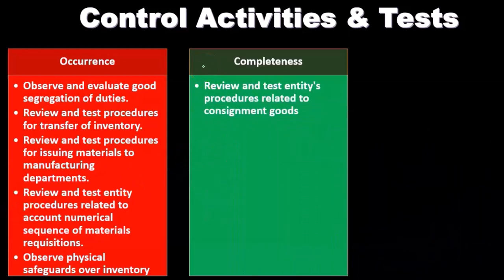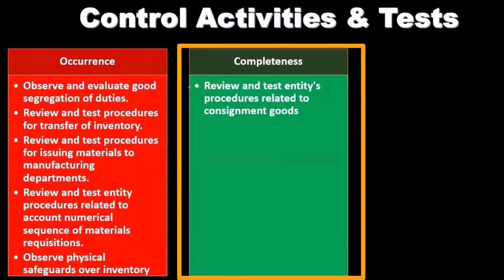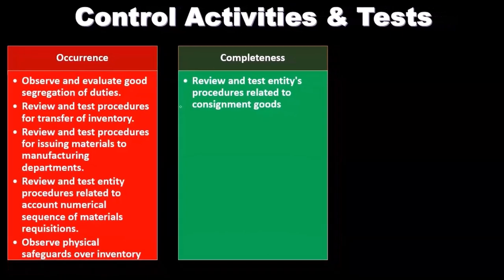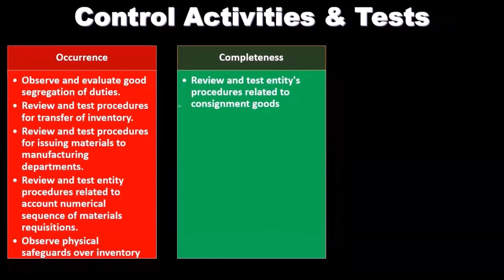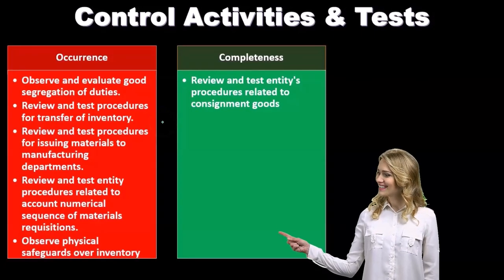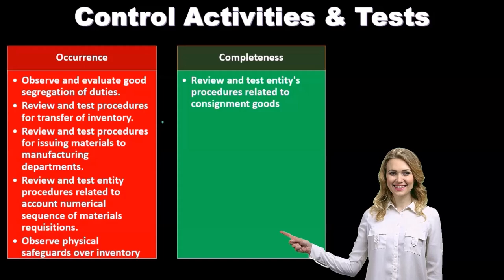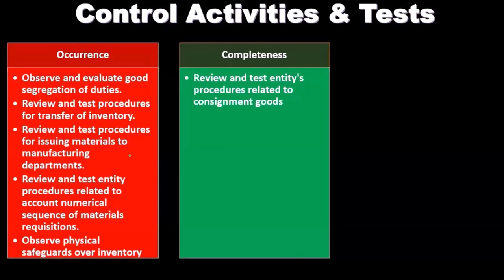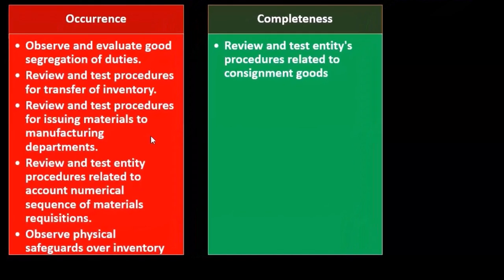For the assertion of completeness, we review and test entity procedures related to consignment goods. When thinking about completeness, we consider the concept of consignment. If the entity were to misstate inventory — whether by error or intent — they'd likely overstate it, because that would make them look better. With consignment, the people who physically hold the inventory aren't the actual owners: one company provides inventory to another, still retaining ownership, while the other company facilitates a sale and then remits a portion of the proceeds.